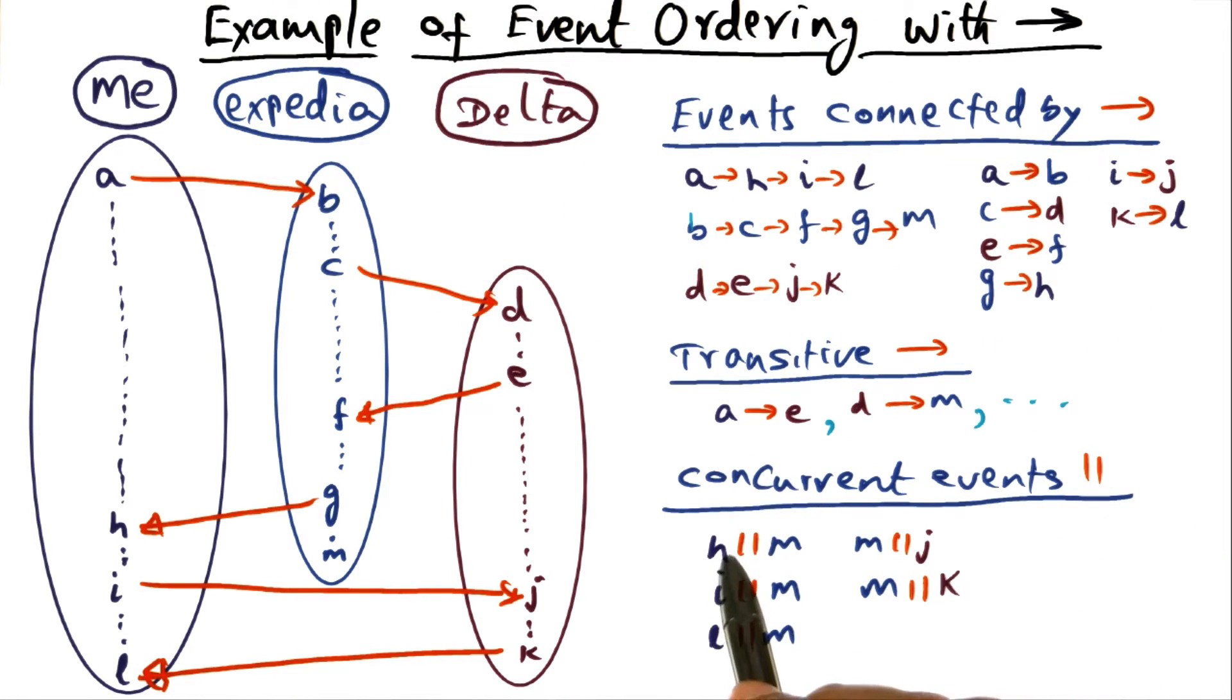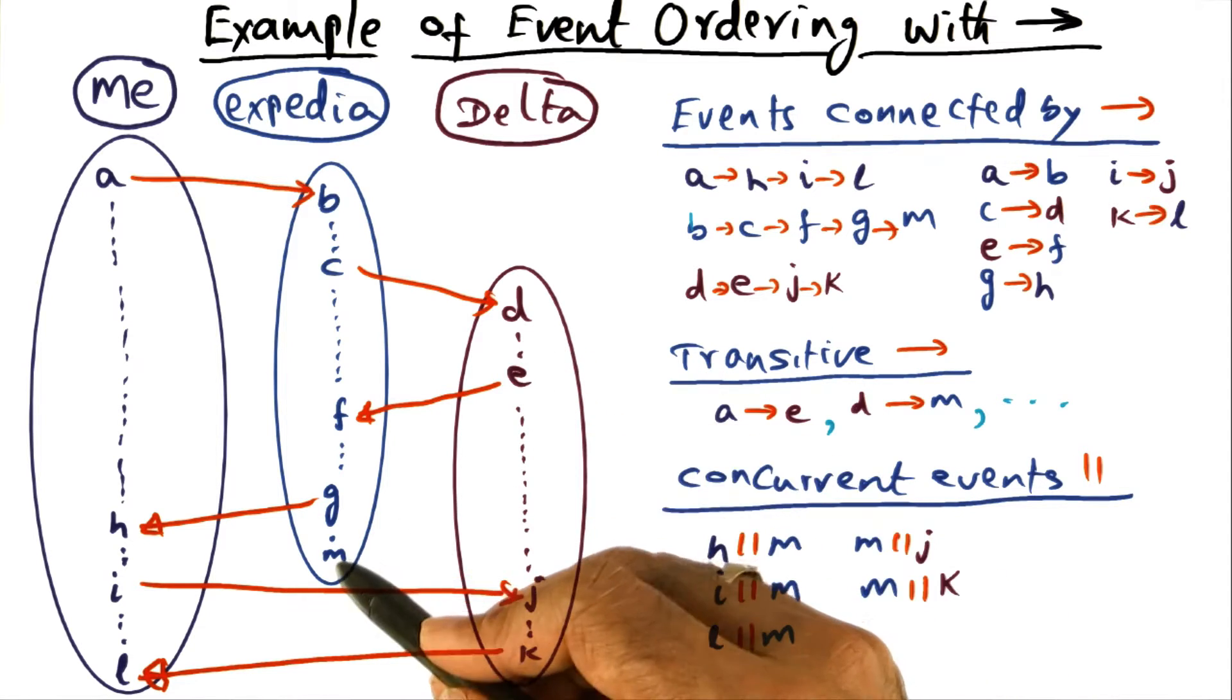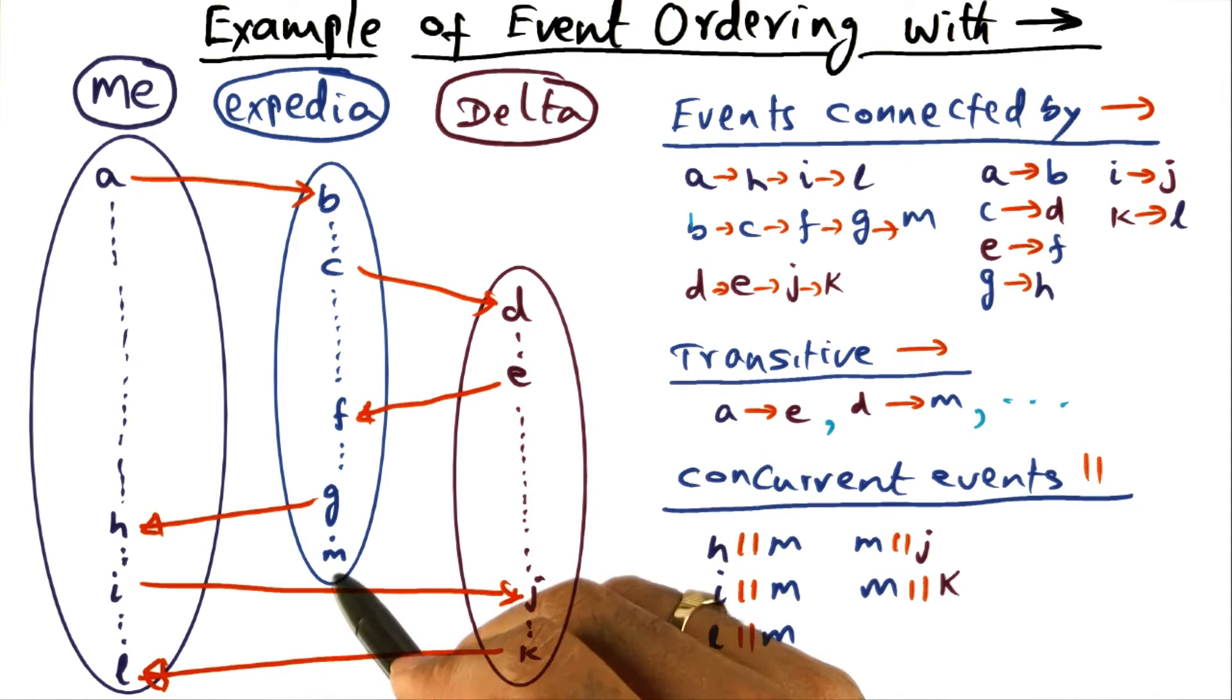That A must have happened before E. Similarly, we can identify other events that are transitively connected to one another because of the happens before relationship. So for instance, D and M apparently don't have any direct connection,